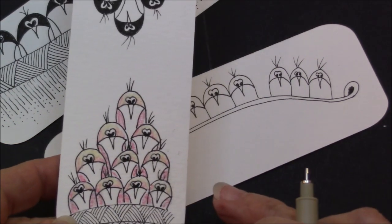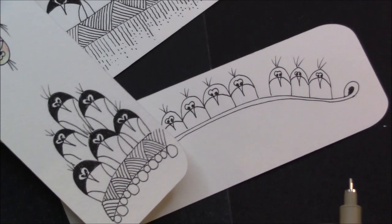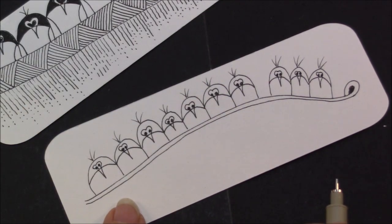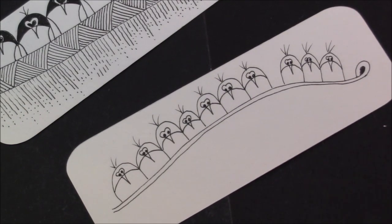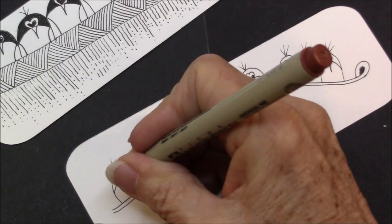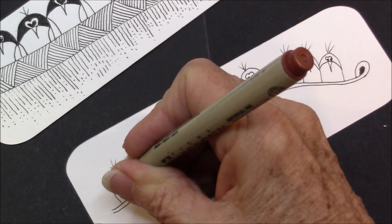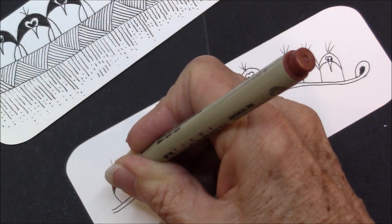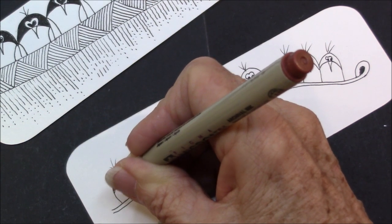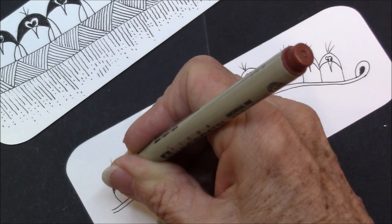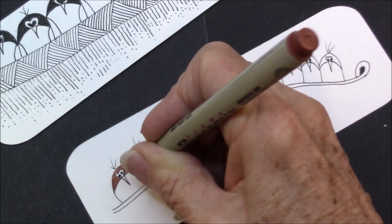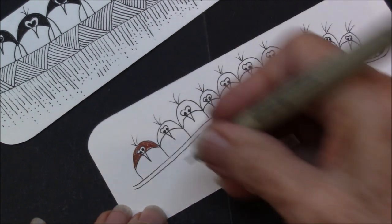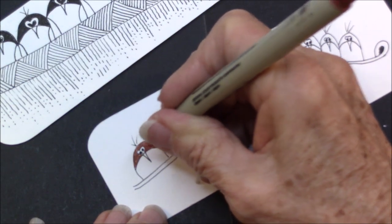I'm going to go ahead and color mine in. I am going to switch off to a brown pen and see what happens. I'm going to give these little birds a little sparrow look, so I'm going to color that in with my brown pen.